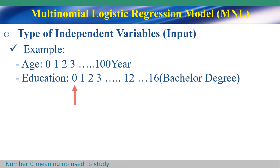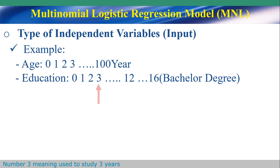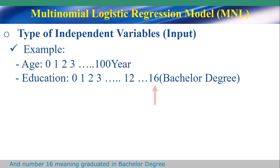For Education: number 0 means no years of study, number 3 means 3 years of study, and number 16 means graduate with a bachelor's degree.